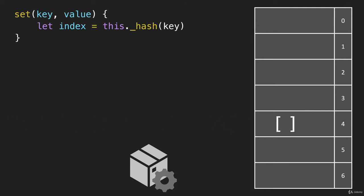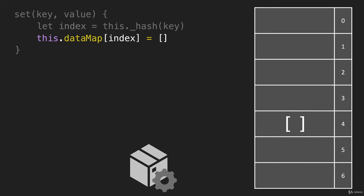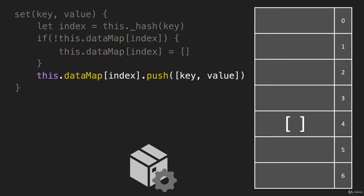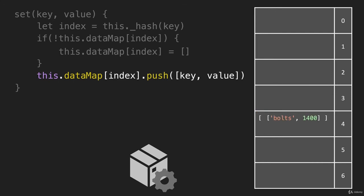Next, we need to build an empty array that we will push the key-value pairs into. So this.dataMap at the index of 4 — we want to create an empty array like this. This is a step we only want to do if there isn't already an array there, so we'll wrap this in an if statement. This is basically saying: if this is completely empty, only then do we create the array. Now we can push in our key-value pair — this.dataMap at index — and push the array with the key and value.